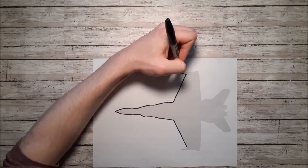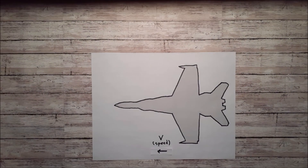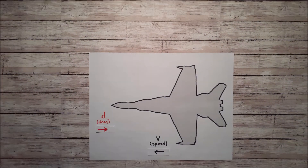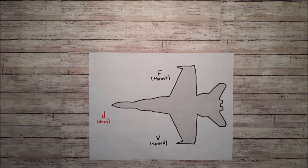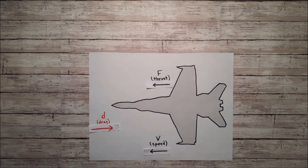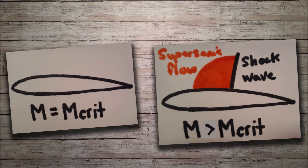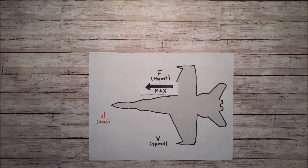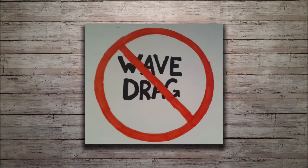Here is a plane moving at a constant speed V, and experiencing a constant drag force D. The plane accelerates by generating thrust F. As F increases, so too does V, and along with it, D. Once we reach a certain speed called the critical Mach number, shock waves begin to form and wave drag takes effect. In order to maintain speed, thrust must go up, and in order to gain any speed, thrust must go up drastically. But increasing thrust is inefficient, and in plenty of cases, not possible. An engine can only provide so much thrust, but the reactive force provided by the air will always be able to match it. There is, however, another option: reducing wave drag.